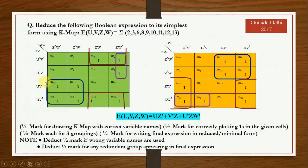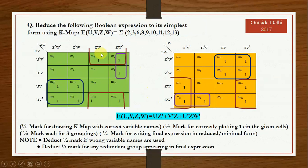Writing the reduced expression: for the first quad, horizontally UV and UV-bar appear so V is omitted, and vertically Z-bar W-bar and Z-bar W appear so W is omitted — product term is U Z-bar. For the second quad, horizontally U-bar V-bar and UV-bar appear so U is omitted giving V-bar, and vertically ZW and ZW-bar appear so W is omitted — product term is V-bar Z. For the pair, horizontally U-bar V-bar and U-bar V appear so V is omitted giving U-bar, and vertically ZW-bar only — product term is U-bar Z W-bar. The final reduced SOP expression is the sum of these product terms.